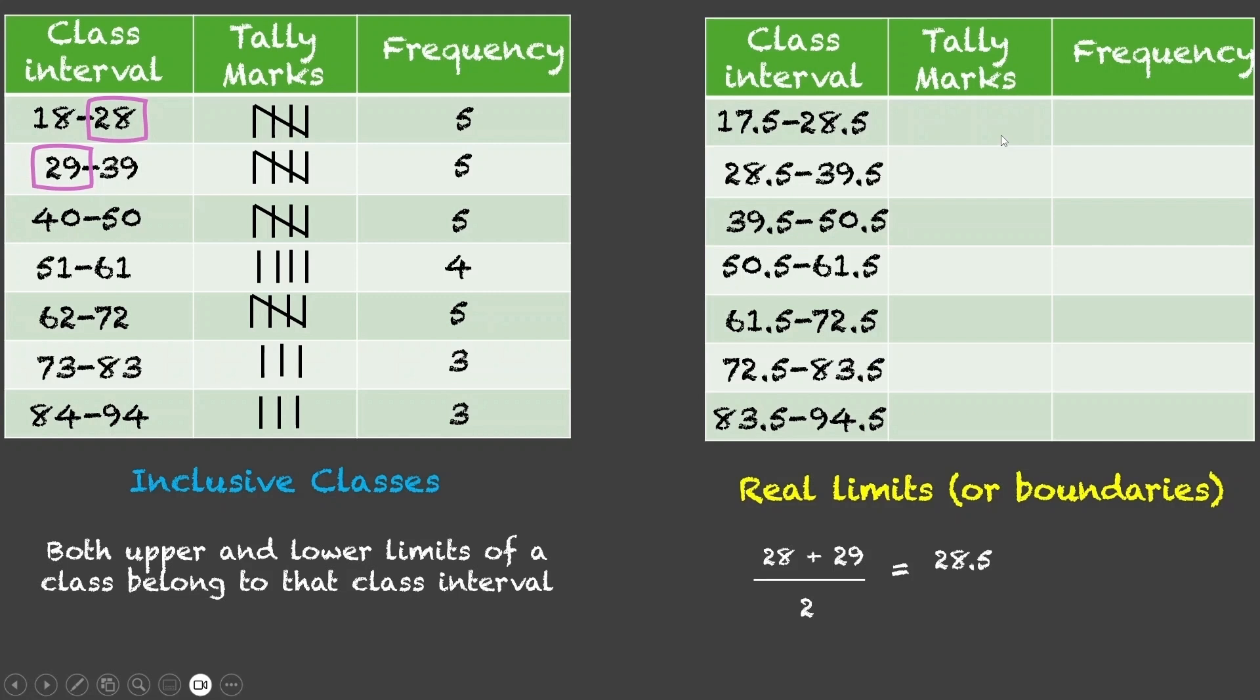Now, accordingly, we can fill in the rest of the table, the tally marks and the frequency looking at the data just like how we did last time. You will also notice that now these classes are continuous classes. Well, these were discrete classes.